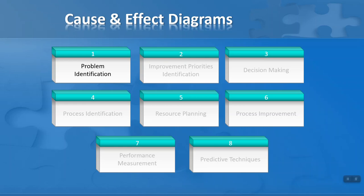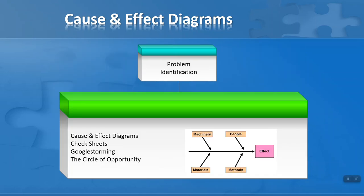This is our structure for our overall program. We are in section one, problem identification—that's one of eight sections. Within problem identification we have four techniques, and the first of these techniques is the subject of this lesson: cause and effect diagrams.